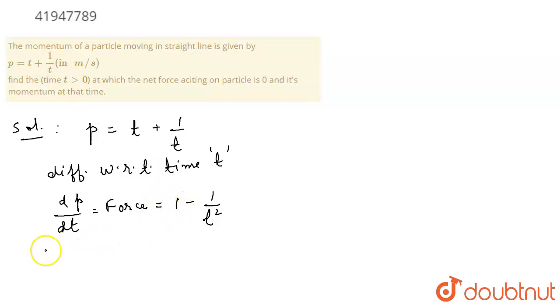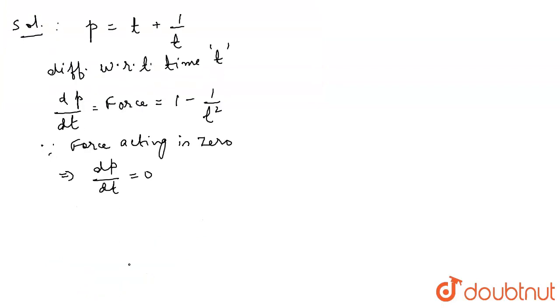Since force acting is 0, it means dp by dt which is the force is 0. Now, substituting the value of 1 minus 1 by t square equals 0. In solving, we get t square is equal to 1 implies t is equal to plus minus 1.